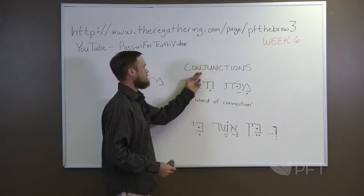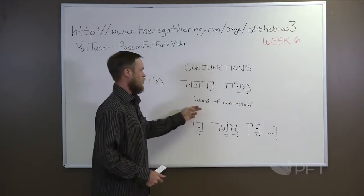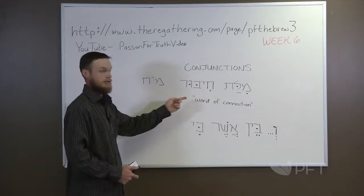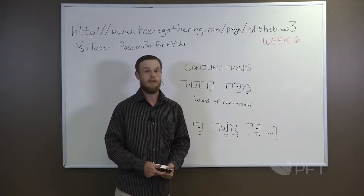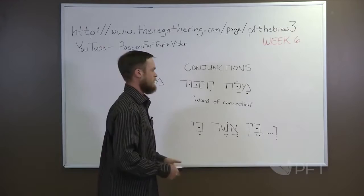Our main topic for the day is conjunctions. A conjunction in Hebrew is called a milat chibur — it's a part of speech. Milat chibur means word of connection, abbreviated by mem, double hash marks, followed by a chet. Not to be confused with a preposition, which is milat yachas — mem, double hash marks, yod. This is a milat chibur.